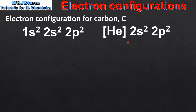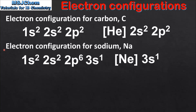Note we can also write the condensed or abbreviated electron configuration. This uses the symbol of a noble gas to represent the core electrons. Abbreviated electron configurations will be covered in more detail later in the video.